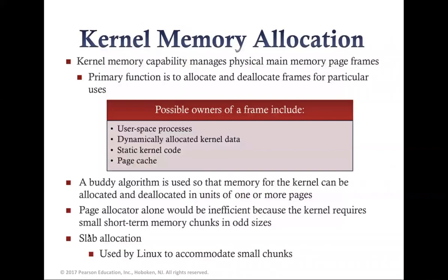For Linux kernel memory allocation, the kernel memory capability manages physical memory page frames, with the primary function of allocating and deallocating frames for particular uses. Possible owners of a frame include user space processes, dynamically allocated kernel data, and static kernel code.